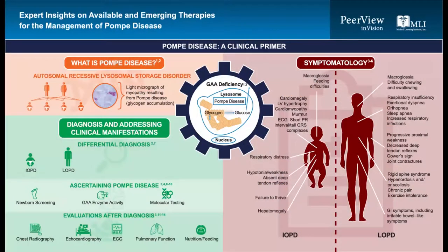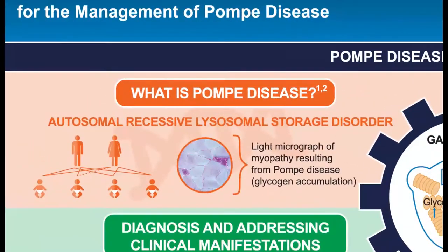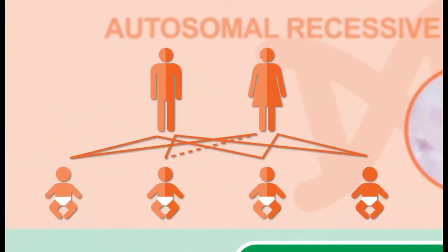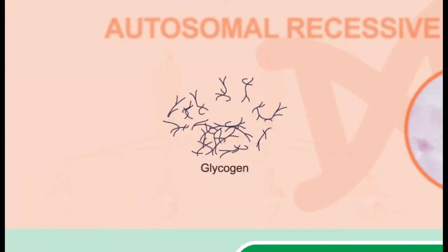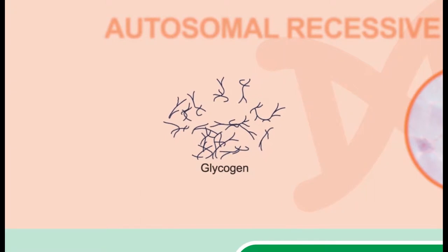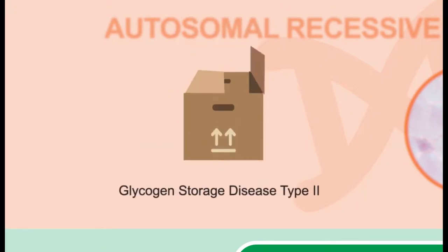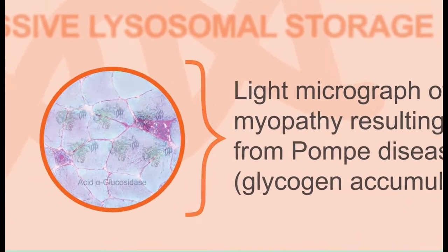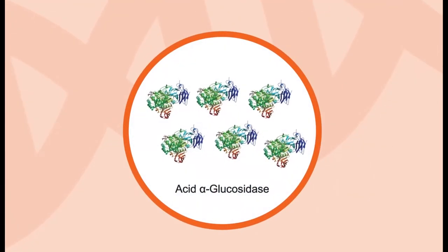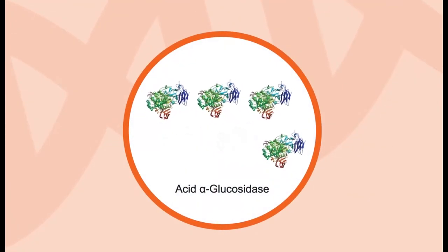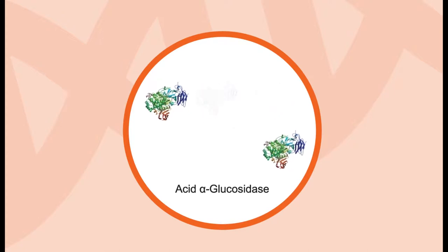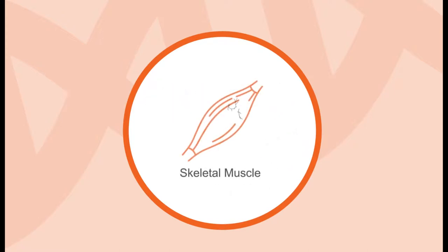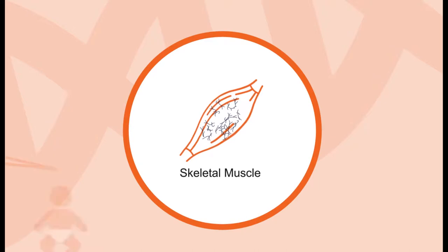Pompe disease is an autosomal recessive lysosomal storage disorder. It is also categorized as a glycogen storage disease, specifically glycogen storage disease type 2. Pompe disease is due to deficiency in the lysosomal enzyme acid alpha-glucosidase, and this deficiency leads to intralysosomal accumulation of glycogen in all tissues, particularly in skeletal muscles.